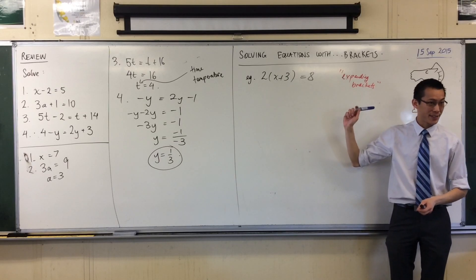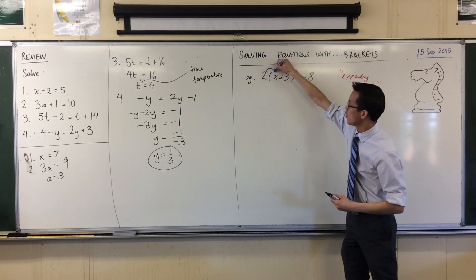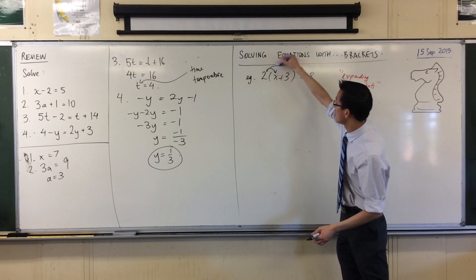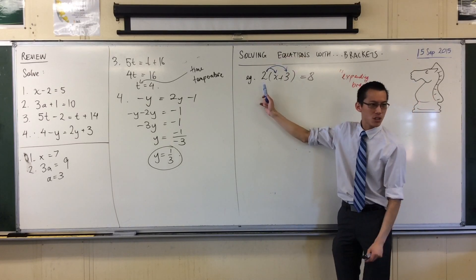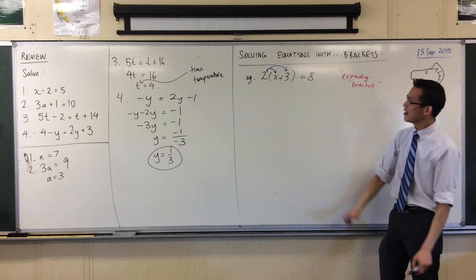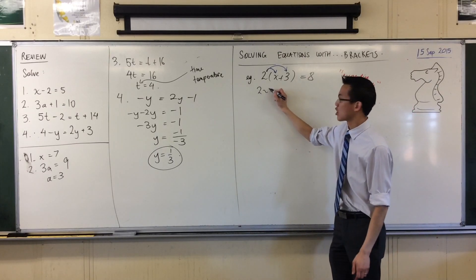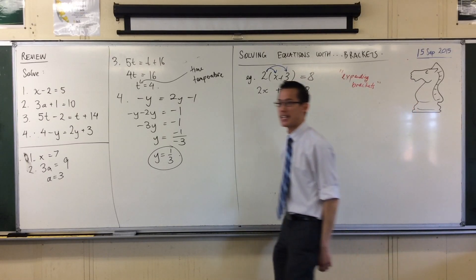Let me expand the brackets. I'm going to get rid of them like this. I've got this 2. It multiplies by the x, but it also multiplies by the 3. That's kind of what the brackets mean. Whatever this is doing, do it to everything in there. So 2 times x, how would I write that? 2x. 2 times 3. That's just 6.